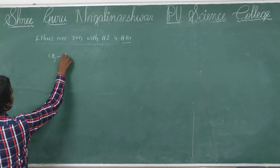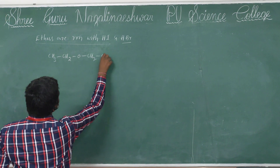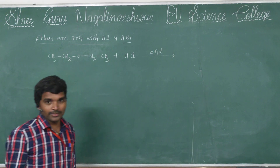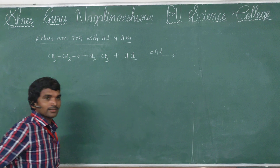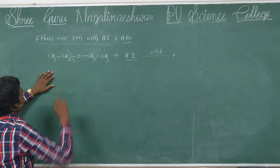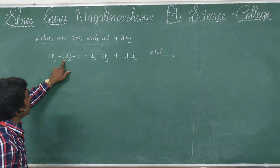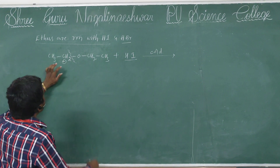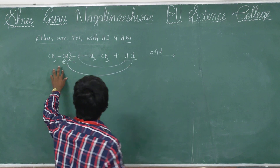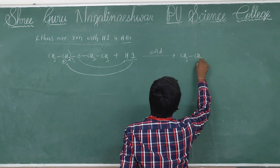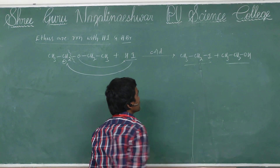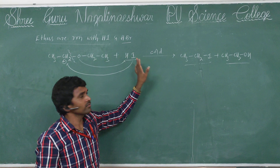Here I am taking diethyl ether reacting with hydrogen iodide (HI) under cold conditions with one mole only. In ethers, bond cleavage occurs and there is formation of a carbocation. The oxygen is attached to the proton and iodine is attached to the carbocation. Then formation of ethyl iodide and ethyl alcohol — these will be formed. This is in less amount of HI under cold condition, one mole.